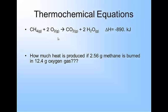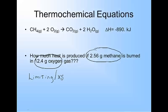Alright. We are going to use the same thermochemical equation written in the same format. Now it asks how much heat is produced if 2.56 grams of methane is burned in 12.4 grams of oxygen. Notice in the problem they give you the mass of both reactants. What kind of problem is this? What kind of problem is this? Yep, limiting excess problem.